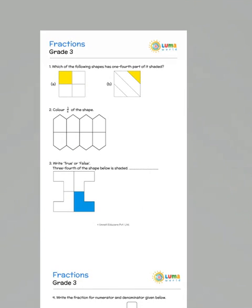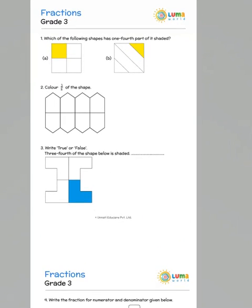Let's answer the worksheet on fractions. Which of the following shapes has one-fourth of the part shaded? So we have the first one which has got one-fourth of the portions that are shaded.